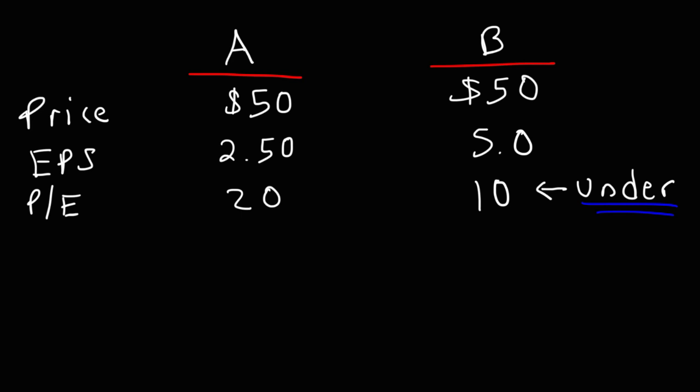Now let's calculate the PEG ratio. Let's say the earnings growth rate for Company A is 20%, while the earnings growth rate for Company B is 5%. The earnings growth rate used on different finance websites to calculate the PEG ratio may vary — some may use a 5-year earnings growth rate, while others may use an annual earnings growth rate. But just to keep things simple, let's use an annual earnings growth rate.